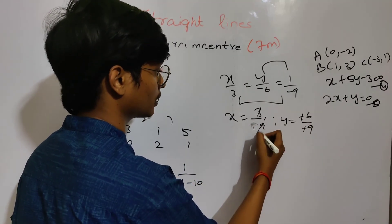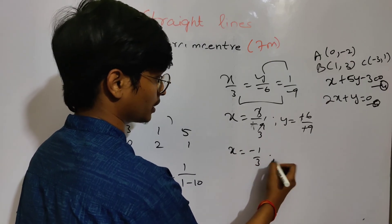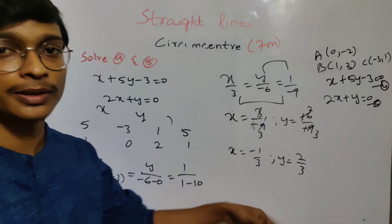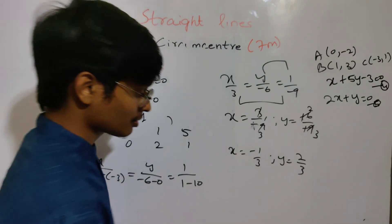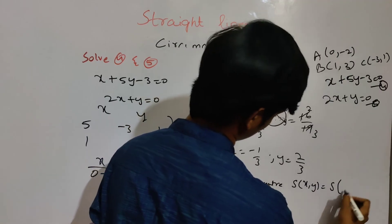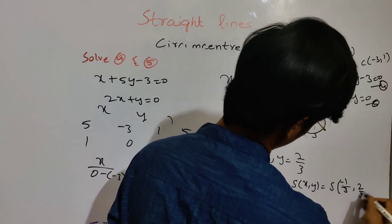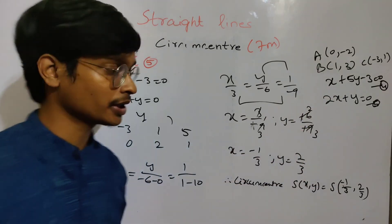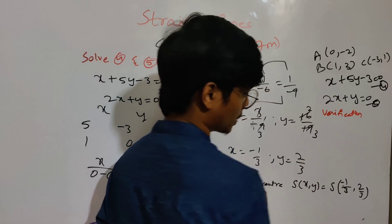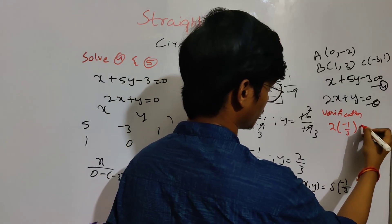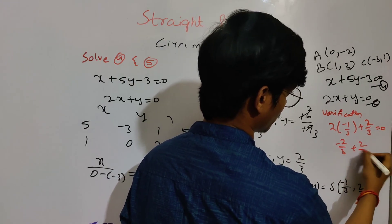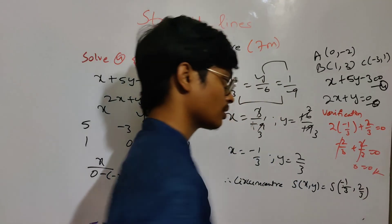It is minus 3 by 1 — so x equals to minus 1 by 3, y equals to 2 by 3. Now to check: 2 of minus 1 by 3 plus 2 of 2 by 3 equals to 0. Minus 2 by 3 plus 2 by 3 equals to 0. Plus minus cancel — 0 equals to 0. So that's perfect.